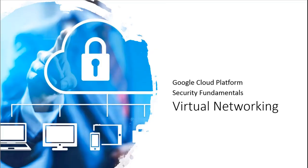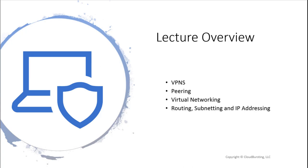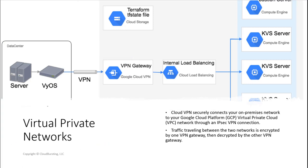Let's talk about virtual networking in GCP, focusing on the security aspects. We'll cover VPNs, peering, virtual networking, routing, subnetting, IP addressing, and DNS. When it comes to virtual private networks, Google has a service called Cloud VPN — a managed service that allows you to connect your on-prem to Google Cloud. It's a gateway-to-gateway solution that needs to support RFC 1918, with an IPsec connection that is fully encrypted at your end and decrypted at Google's end.